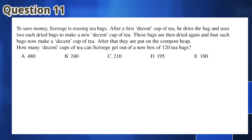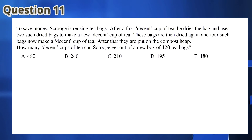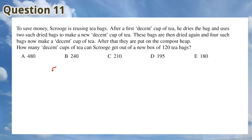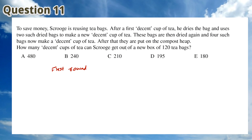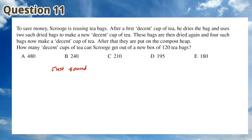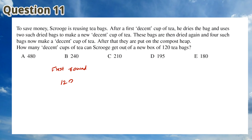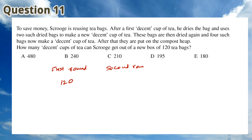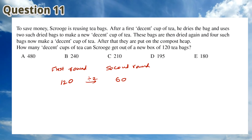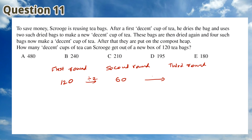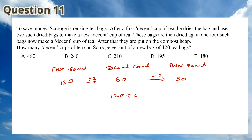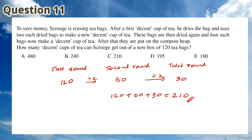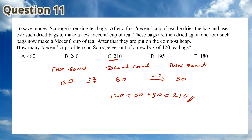For Question 11, since 120 is a multiple of 4, Scrooge is able to use all of the teabags when he uses 2 dried teabags per cup and when he uses 4 dried teabags per cup. The required number of decent cups of tea is, in the first round, 120, plus the second round, which is 120 divided by 2 = 60, plus the third round, which is 120 divided by 4 = 30. This gives us 120 plus 60 plus 30, which is 210. This means that the answer is C.